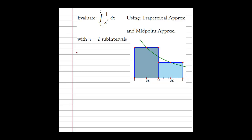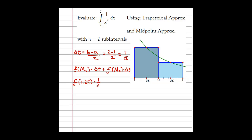Using the same function and the same number of intervals, delta t is still one half — (right endpoint minus left endpoint) divided by the number of sub-intervals, which is 2. This holds whether we use left, right, midpoint rectangles, or trapezoids. So the area is the height at the first midpoint (1.25) times one half, plus the height at the second midpoint (1.75) times one half.